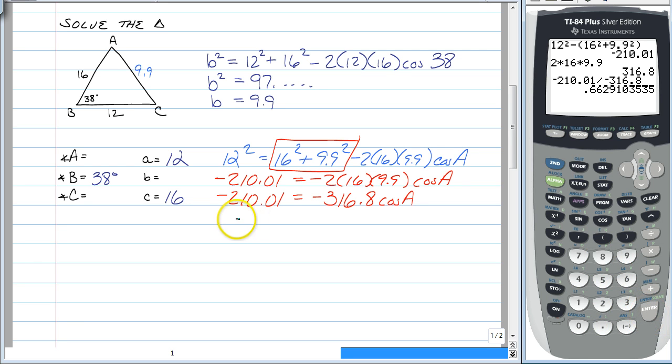Enter. And we get a funky decimal. 0.6629 yada yada yada is equal to the cosine of A. And just like the last video, if we are looking for an angle, you need to use inverse cosine.